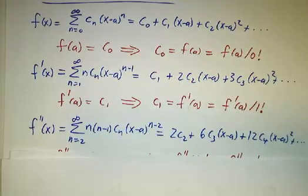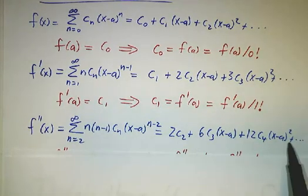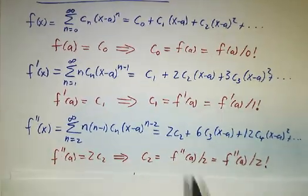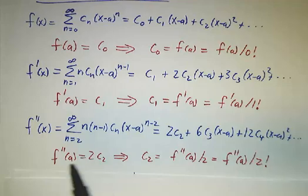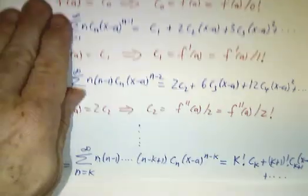You take a derivative again and you figure out that the derivative is 2c2 plus stuff. You evaluate that at a and you get that 2c2 is the derivative. So c2 is half the derivative.